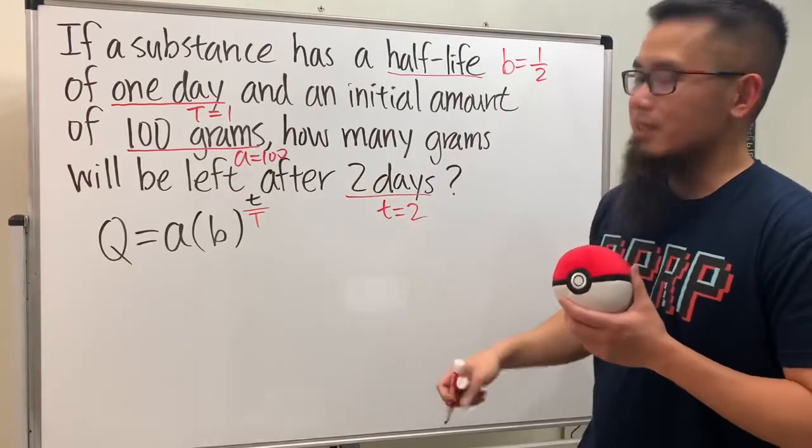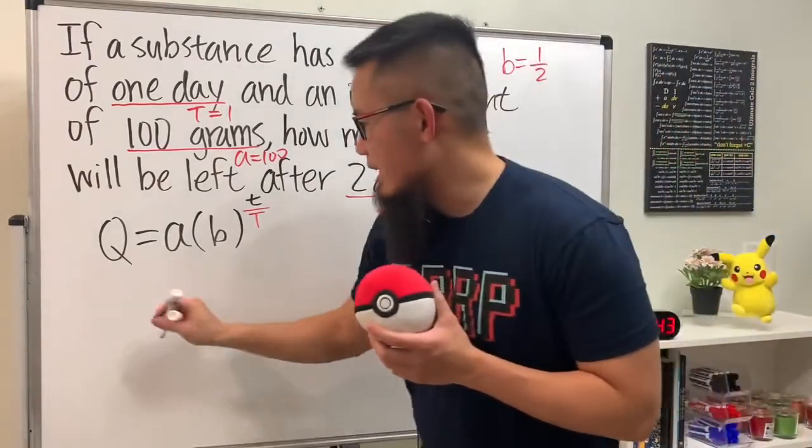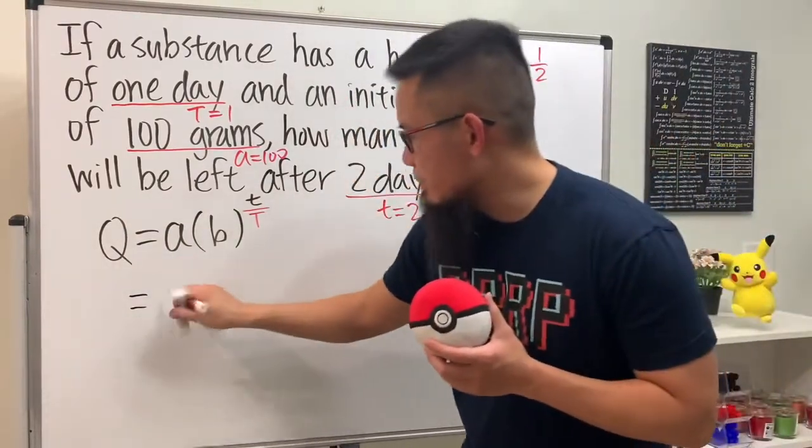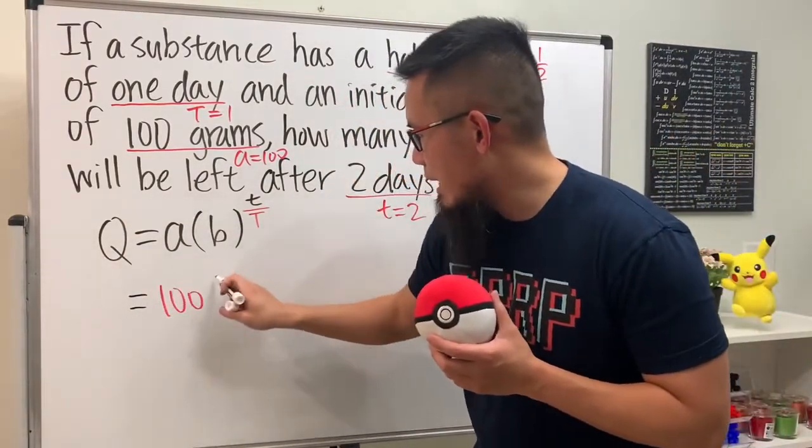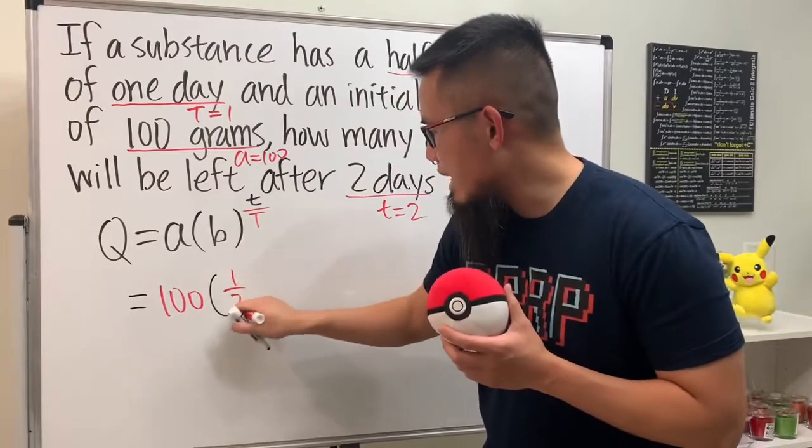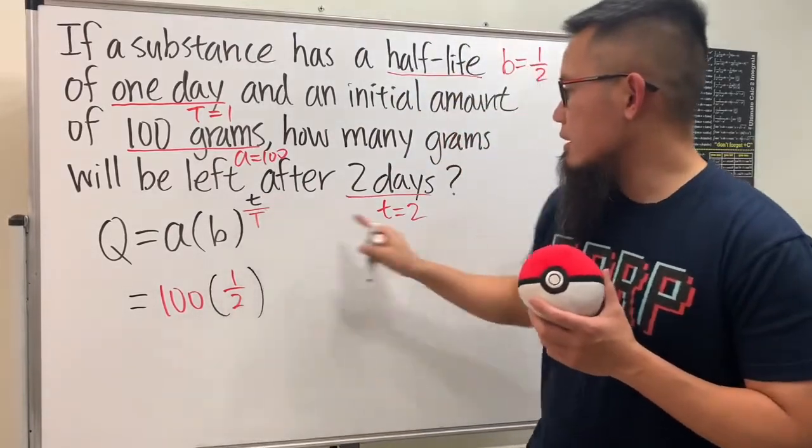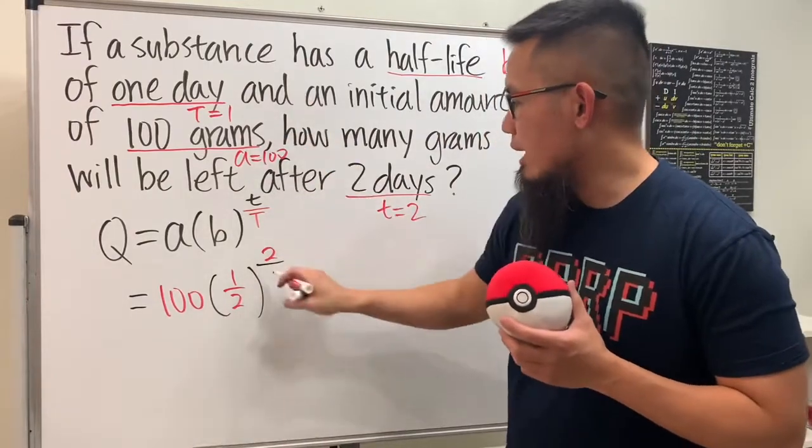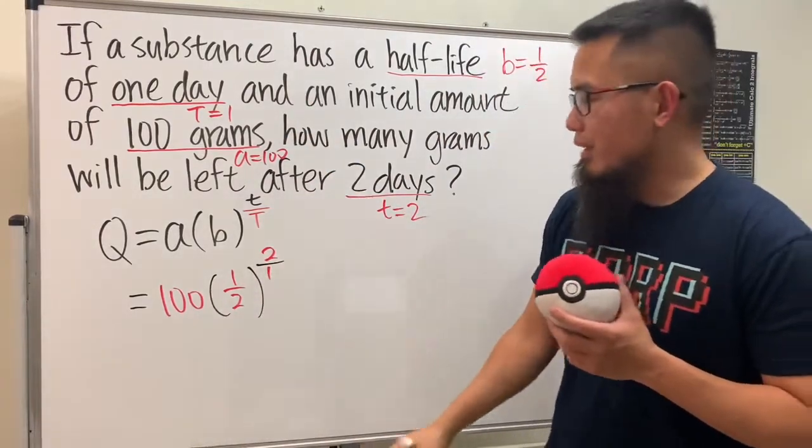Now we can plug in. The quantity will be equal to a, which is 100, multiplied by b, which is 1/2, and then t equals 2 over capital T equals 1, which is just 2.